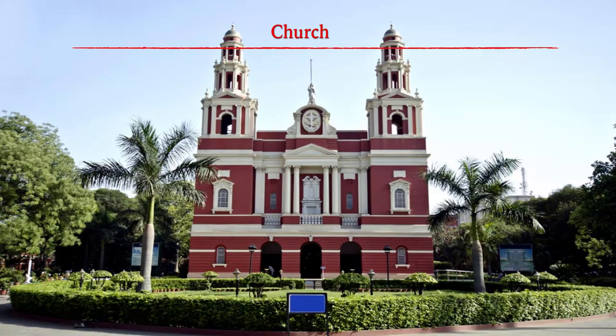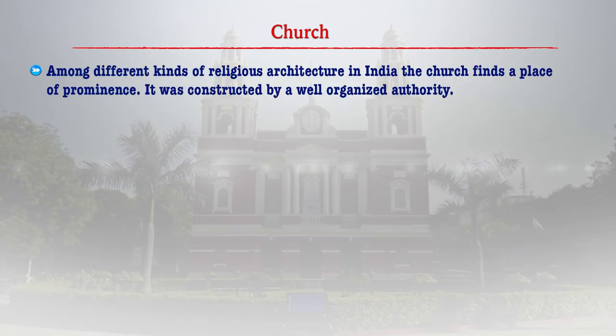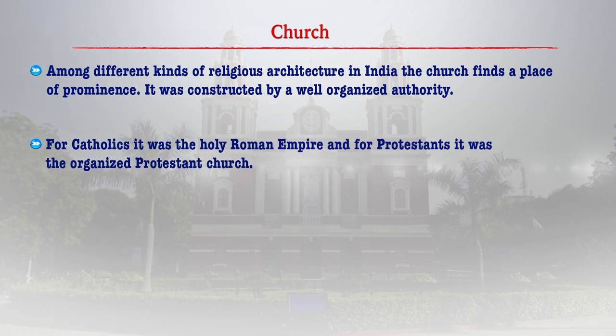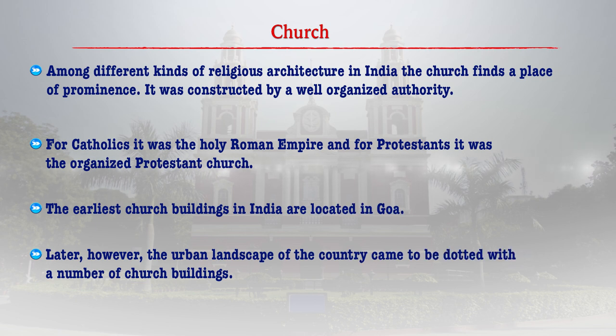After understanding mosques, let us move to the architecture of churches, a different form of religious architecture developed and designed under the authority of the church. We had the Catholics with the Roman Holy Roman Empire and the Protestants with their own Protestant church. We have famous churches in Goa visited by tourists across the globe, along with churches in metro cities such as Delhi, Mumbai, Hyderabad, Calcutta, and Bangalore, with churches distributed all across the country.